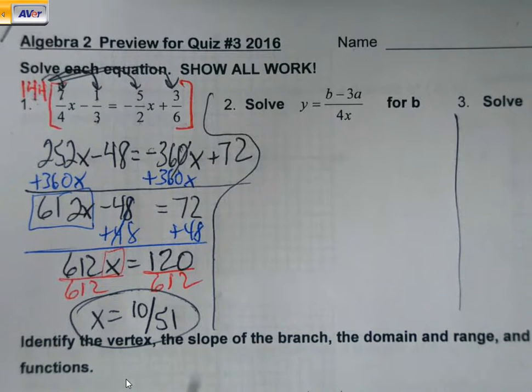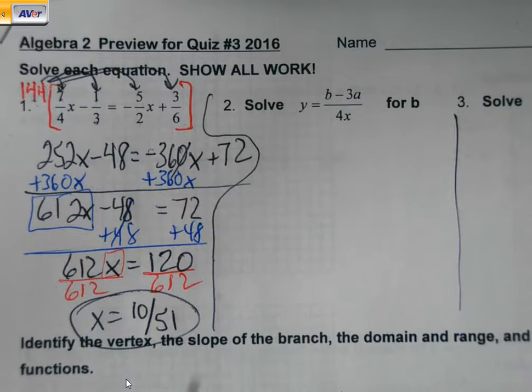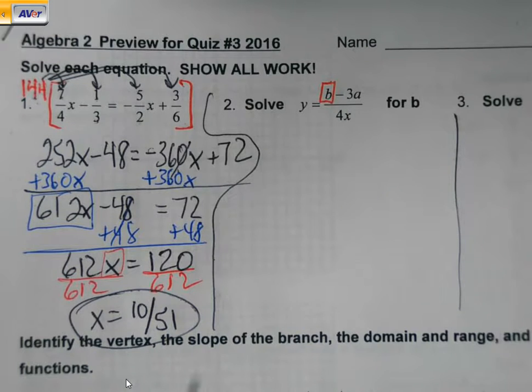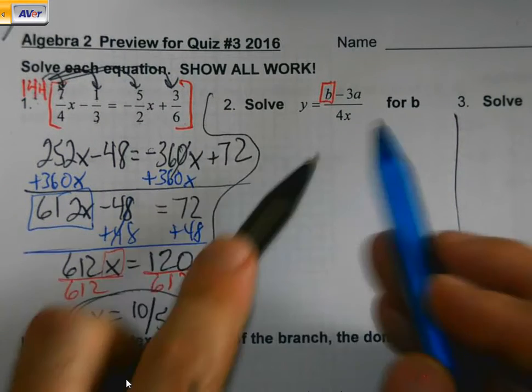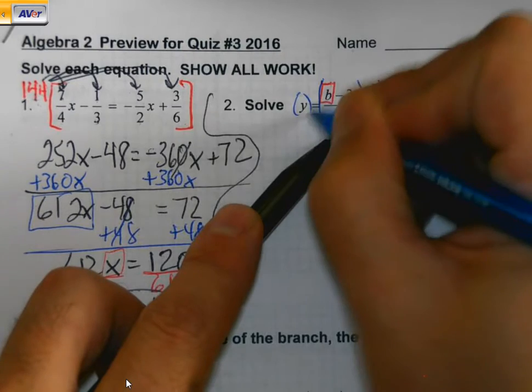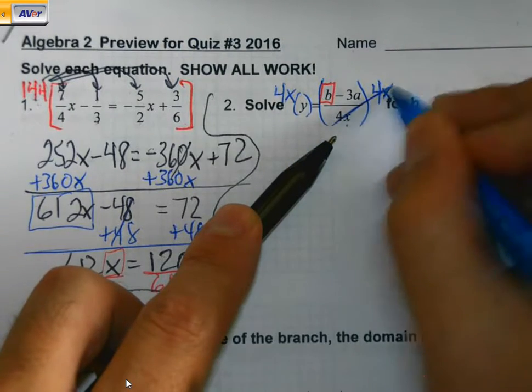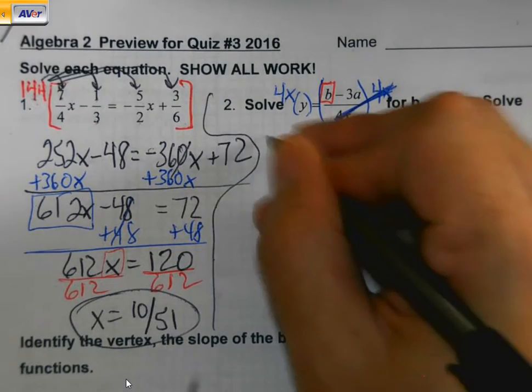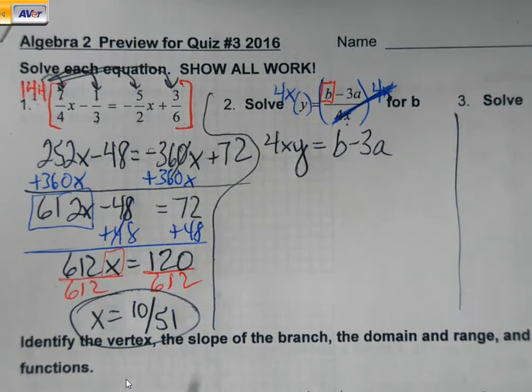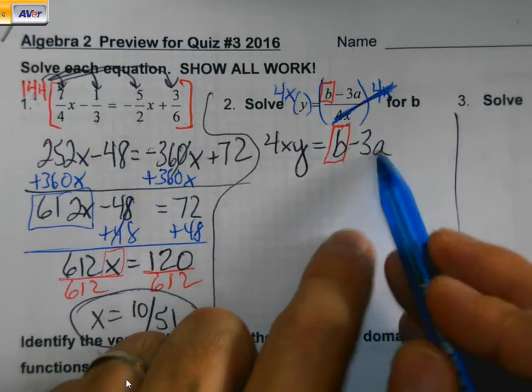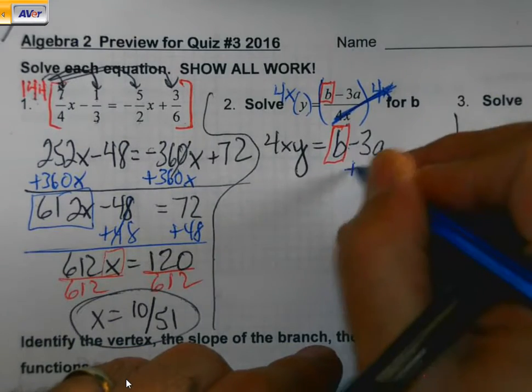Then for our next two, our other arch nemesis, these expressions. Remember what I've said to you before. Look to see what it is you're trying to get alone. So what's the furthest away from b on this side? I'm dividing it by 4x. What's the opposite of dividing something? Multiplying. And whatever I do to one side, I have to do to both. On the right, it's just going to cancel out the 4x.